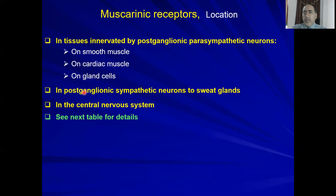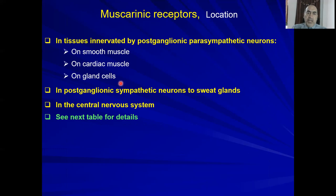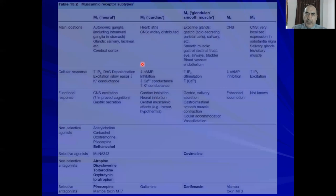An exception is the sweat gland: the nerve to it starts as sympathetic — thoracolumbar — but the post-ganglionic neuron releases acetylcholine at the end, which acts on muscarinic receptors, specifically muscarinic M3 receptors. Muscarinic receptors are also expressed in the central nervous system.